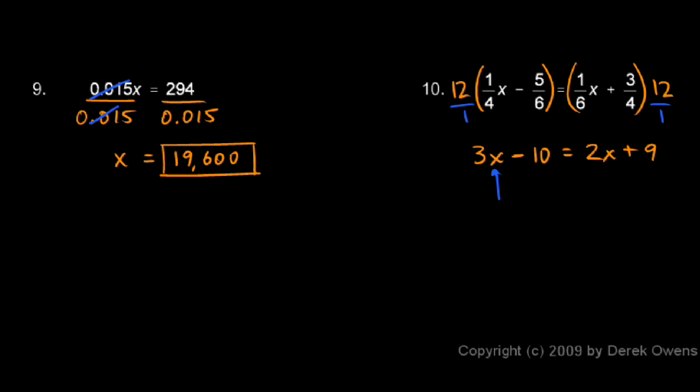Now to solve this, I have to isolate x. There's an x on each side, so I'm going to get rid of this one. I'll subtract 2x. And again, you can do that without writing this step down.